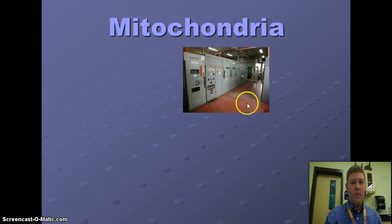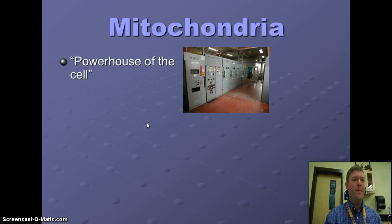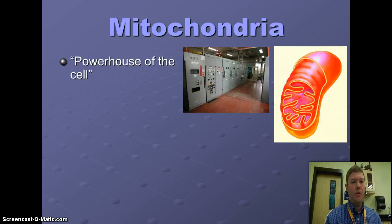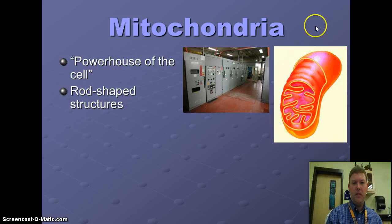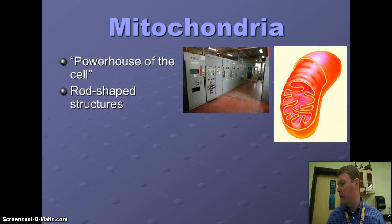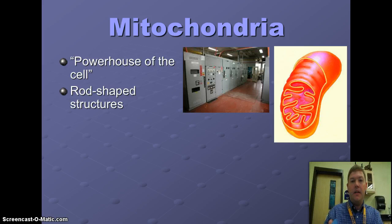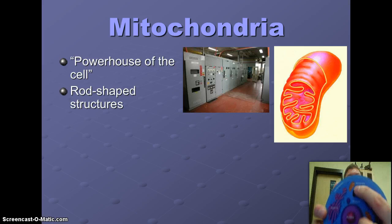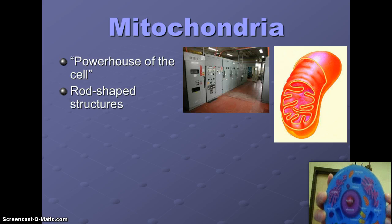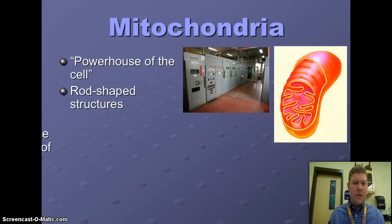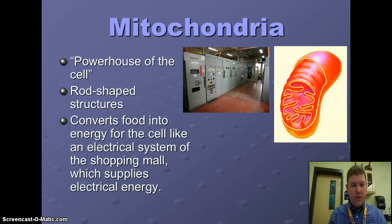Mitochondria — this is a picture of electric panels. Why? Because the mitochondria is the powerhouse of the cell, providing all the energy. It's a rod-shaped structure, and you can see the mitochondria at the top of the cell here. Their job is converting food into energy for the cell, just like the electrical system of a shopping mall which supplies energy to the mall.